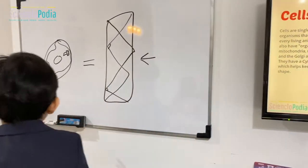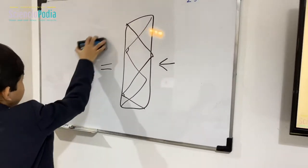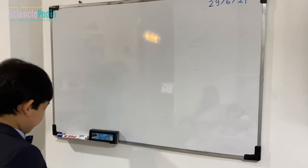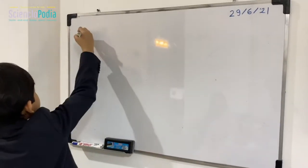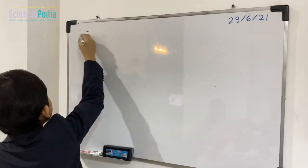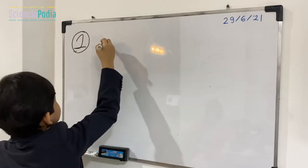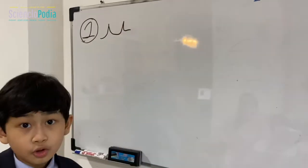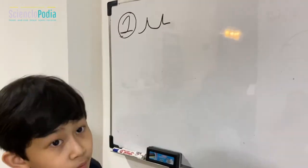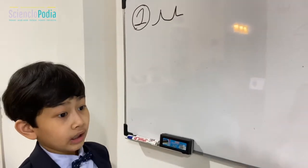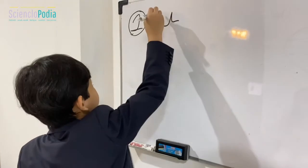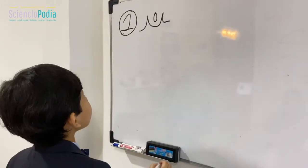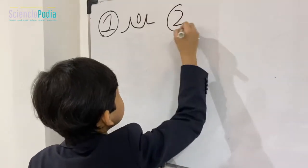There's a process called phagocytosis, and phagocytosis is in phagocytes when they want to eat a bacteria. Phagocytosis works like this in steps. Step one is to get these projections called pseudopodia. Pseudopodia are what will cover a bacteria.